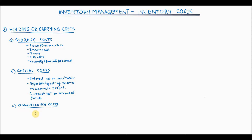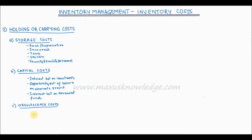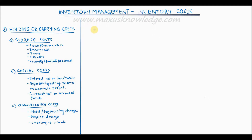Obsolescence cost happens when inventory cannot be used or sold at full value due to model changes or engineering modifications. In case of perishable goods, deterioration through physical damage may happen due to the storage environment, which may result in lost value. Also, shrinkage cost should be considered, which occurs due to breakage or stealing of inventory.